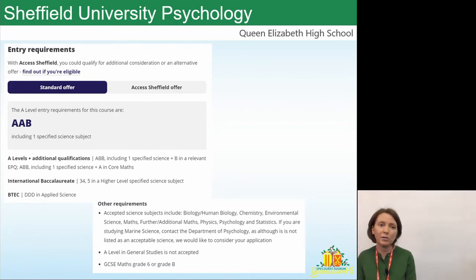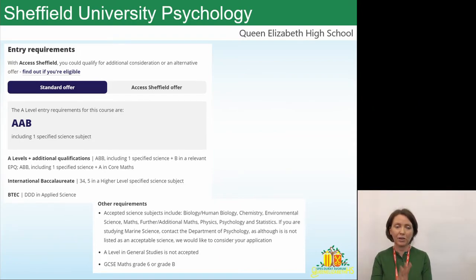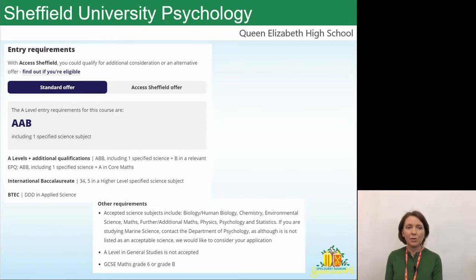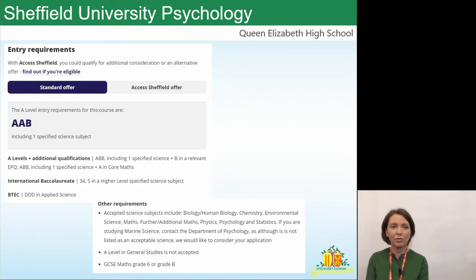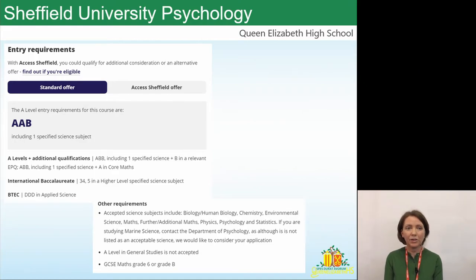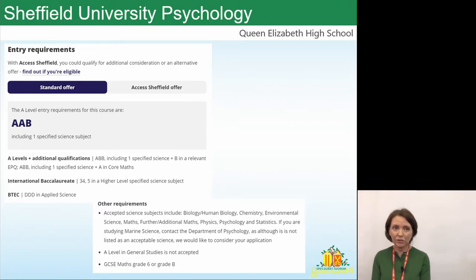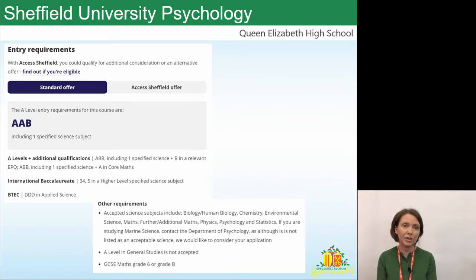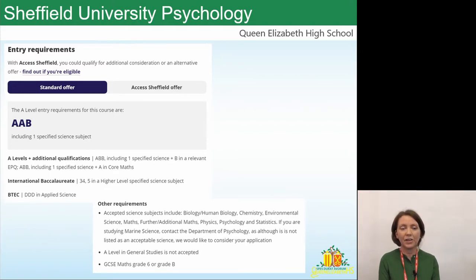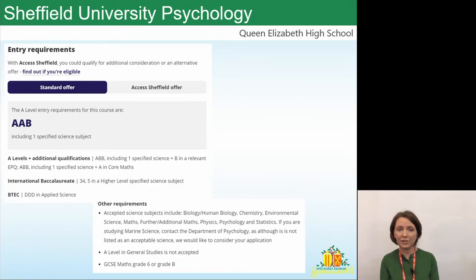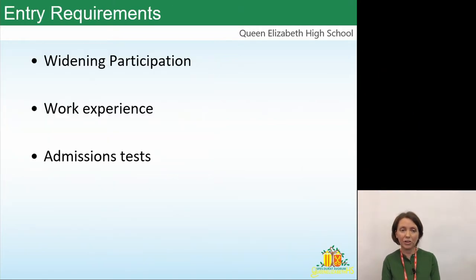As an example, if you went onto the Sheffield University website to study psychology, the standard offer is AAB. If you have an EPQ, they'll make you a lower offer of ABB. For BTECs, they want three distinctions — so in reality, if you contacted them, it's probably two A's and a distinction. They also specify a grade B or grade 6 in maths, and list acceptable science subjects including psychology A-level. If students are unsure, they should email the admissions team.